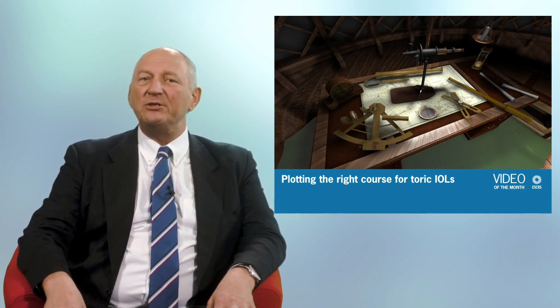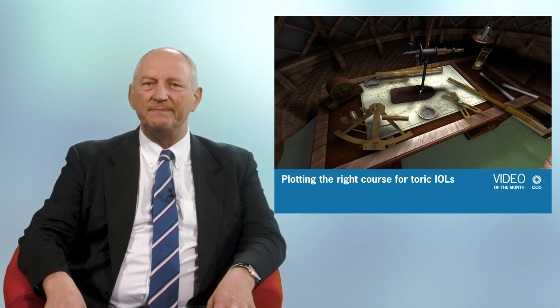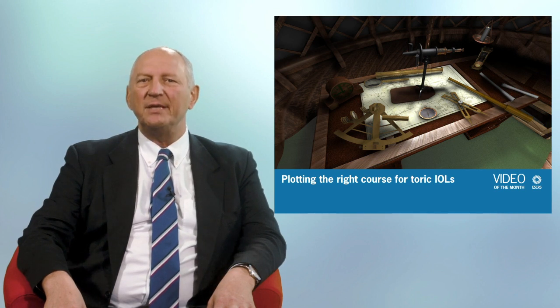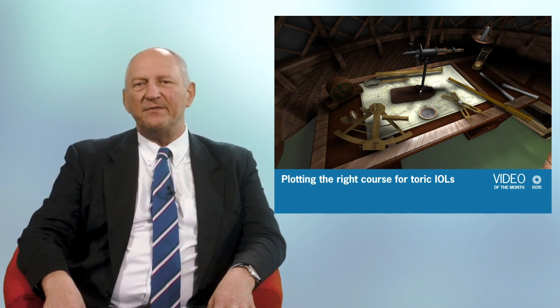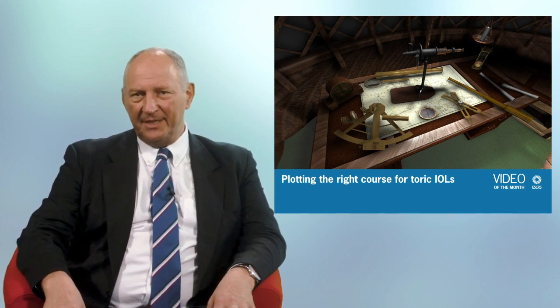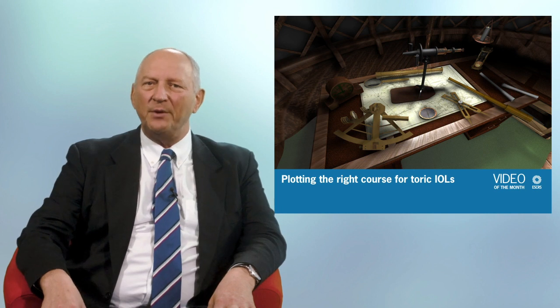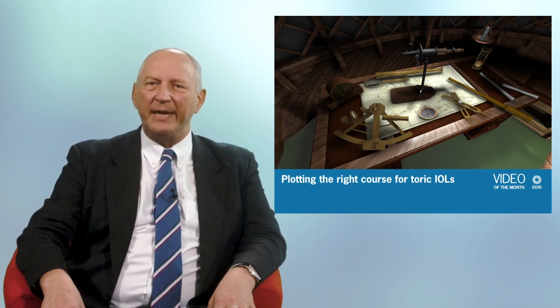K readings were taken using two different biometers and a Scheinfluge topographer. He showed that the most accurate results are predicted by using the integrated median K derived from combining the measurements of all three devices. He has already incorporated this finding into his online toric calculator in what he calls the K calculator. This allows for the calculation of the integrated median K, or mean K where appropriate, from multiple devices.